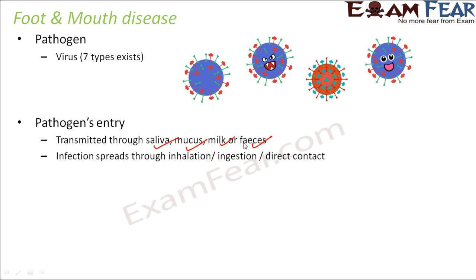For all these infectious diseases in animals, we should make sure the affected animal is kept in isolation. When two animals are nearby, there are chances they will come in contact with each other's saliva, mucus, or milk. Infection spreads through inhalation, ingestion, or direct contact. Ingestion means the intake of food.